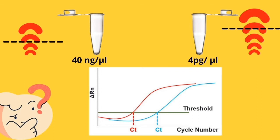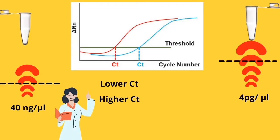Here, the sample with higher concentration takes less cycles to cross threshold line, while 4 picogram sample takes more cycles to cross the line and generate signal. So for conclusion, lower CT means we have higher amount of template in our sample, and higher CT means we have lower concentration of template in our samples.